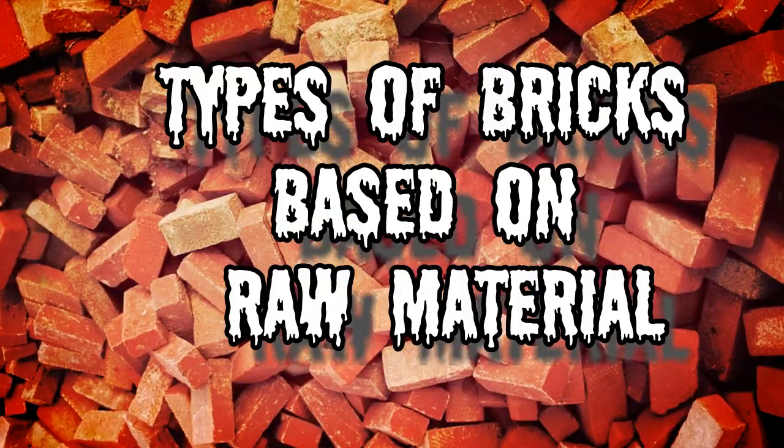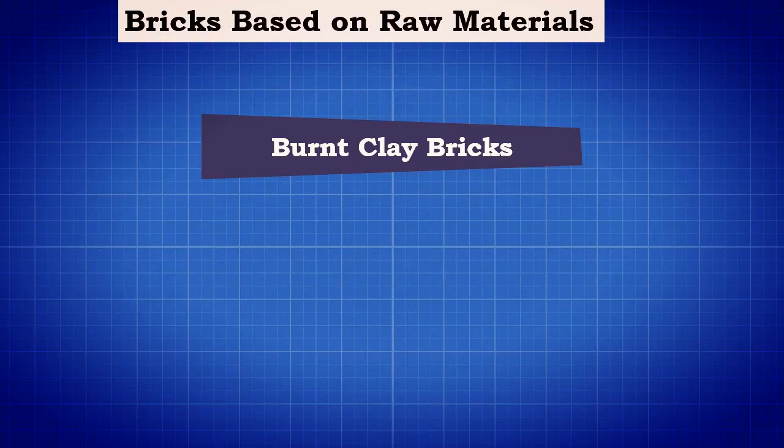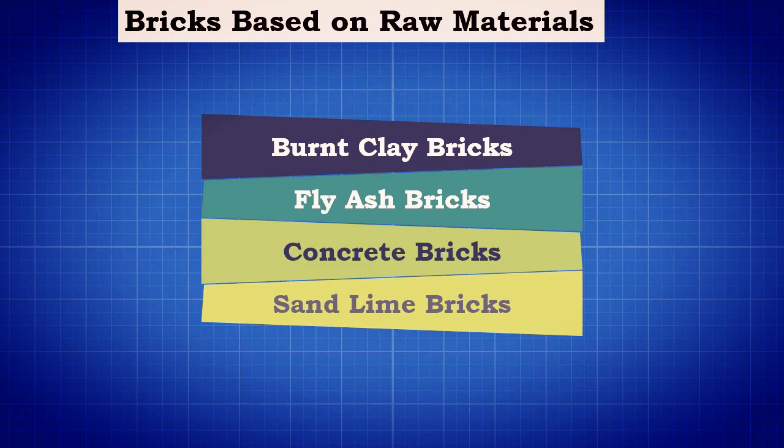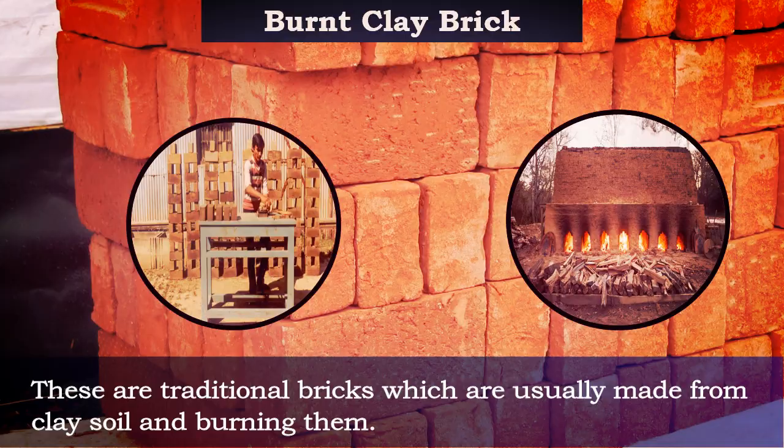Types of bricks based on raw materials. Based on the raw materials used in the manufacturing of bricks, they can be classified into burnt clay bricks, fly ash bricks, concrete bricks, sand lime bricks, and fire clay bricks.